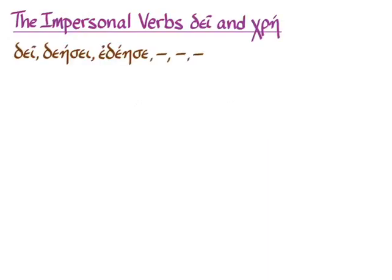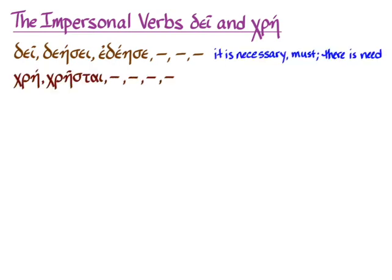These two verbs — δεῖ, δέει, and ἔδει, which means 'it is necessary,' 'must,' or 'there is need,' and χρή, χρῆσται, which means 'ought' or 'must' — are called impersonal verbs. Their principal parts are only in the third person singular; they have no other persons or numbers. Their subject is always 'it,' which is why we call them impersonal. They don't have regular person and number — only third person singular, and not attached to subjects in the way you would normally think.